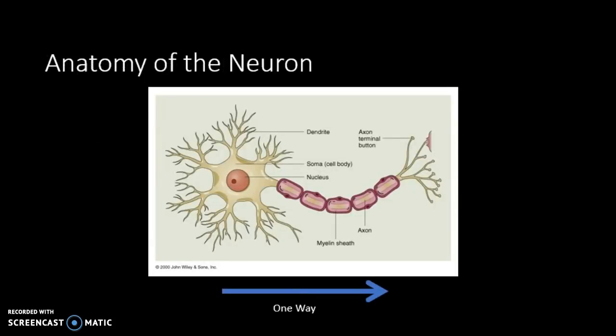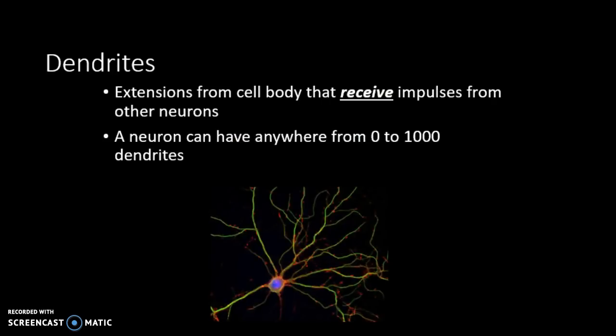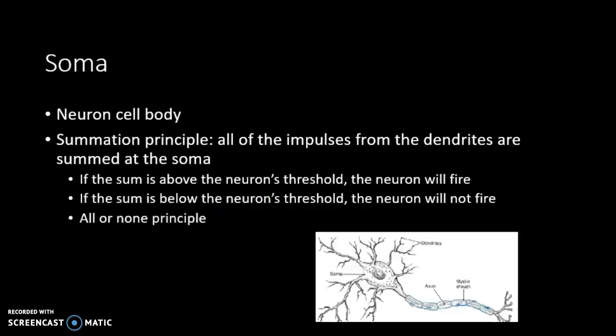Regarding the anatomy of the neuron, all electrical impulses travel one way. Dendrites are extensions from the cell body that receive impulses from other neurons — a neuron can have zero to a thousand dendrites. These connect to the soma, which is the cell body. The axon carries the action potential away from the soma. The summation principle states that all impulses from the dendrites are summed at the soma: if the sum is above the neuron's threshold, it fires; if below, it does not — reiterating the all-or-none principle.